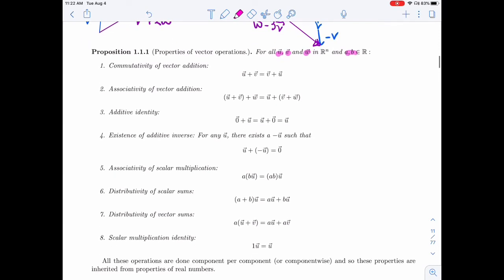So first of all, commutativity of vector addition: whether you take U plus V or V plus U, that doesn't matter, you'll get the same thing. Vector addition is associative as well, so (U plus V) plus W is the same thing as U plus (V plus W).